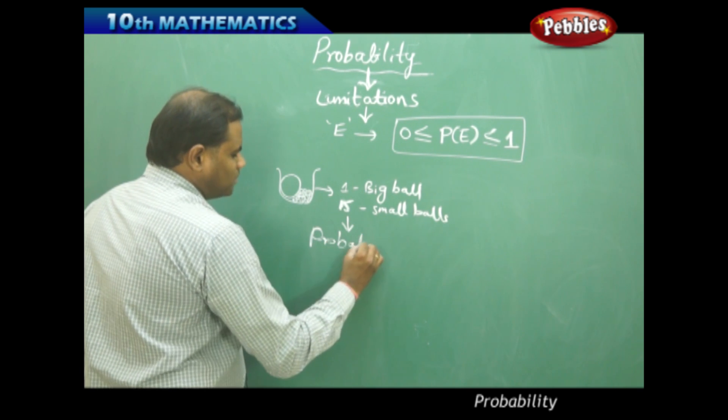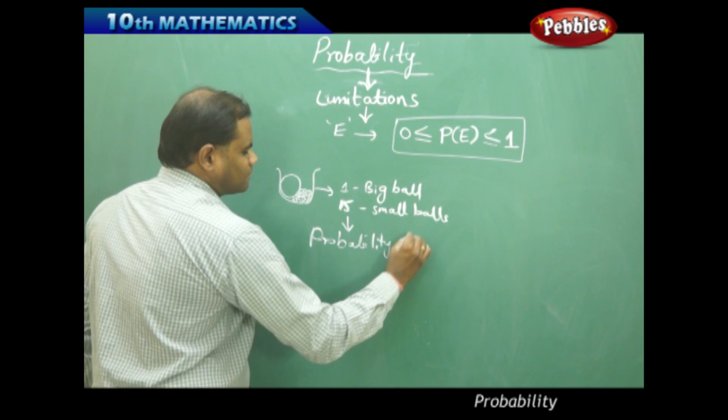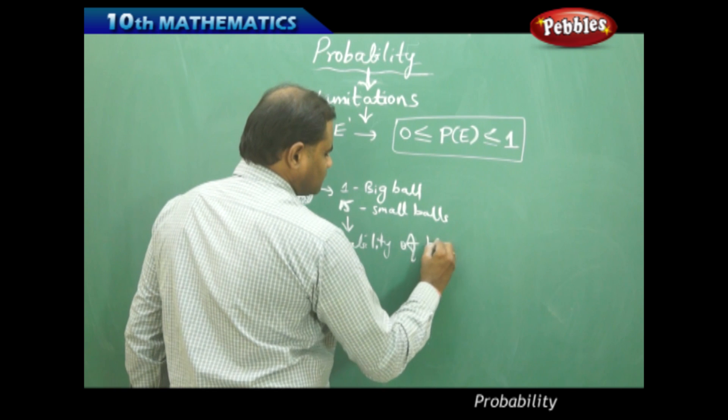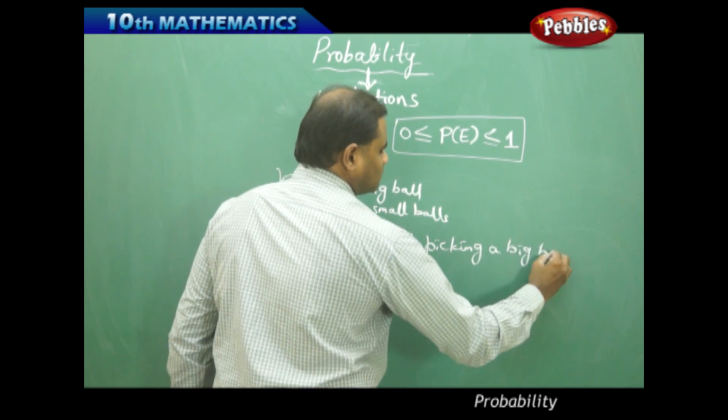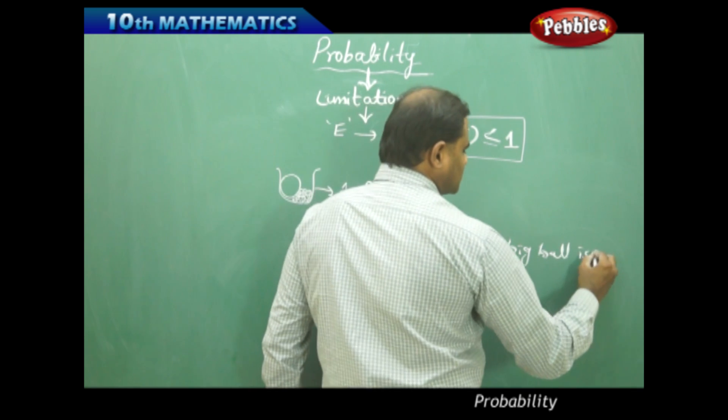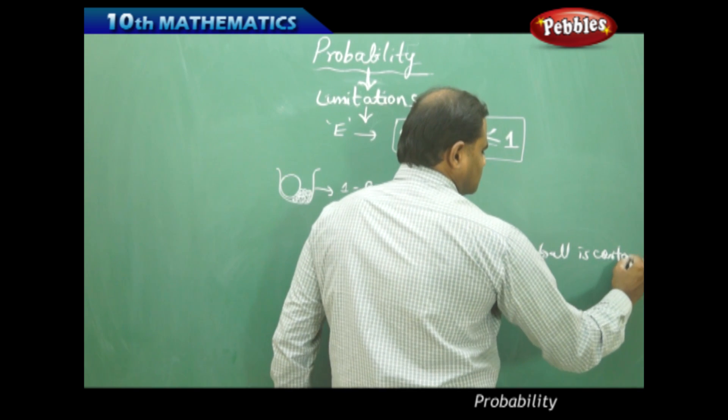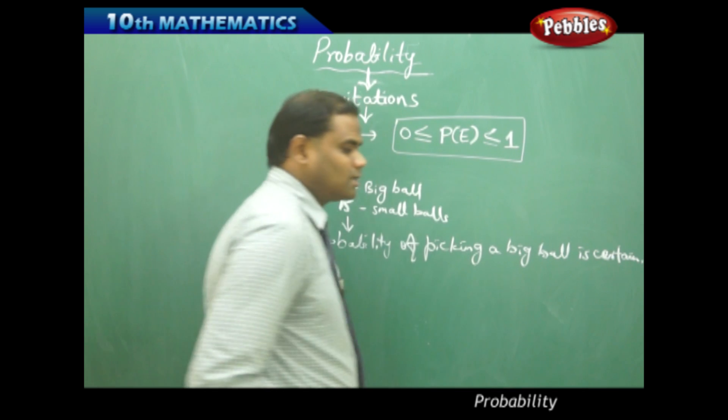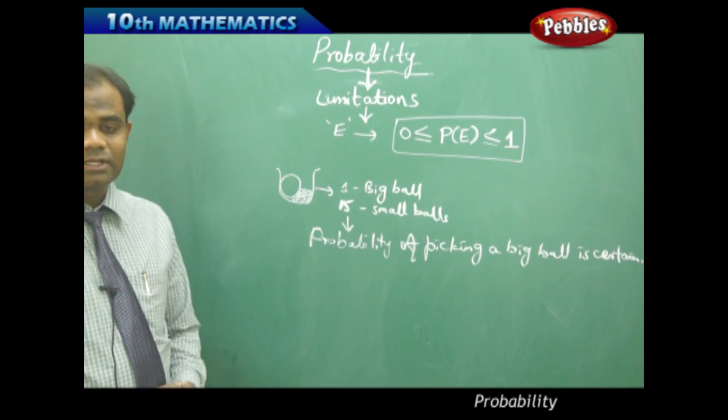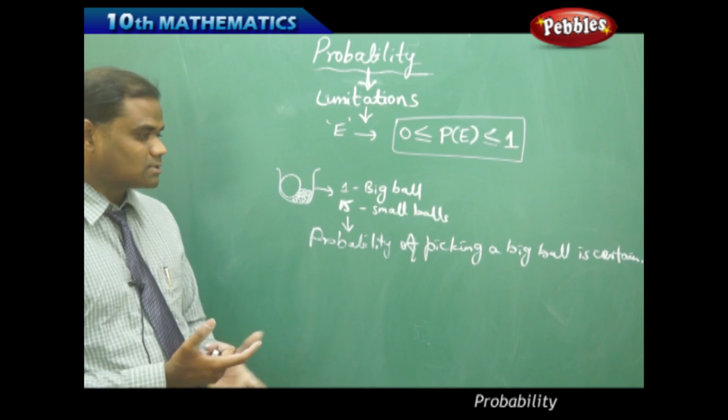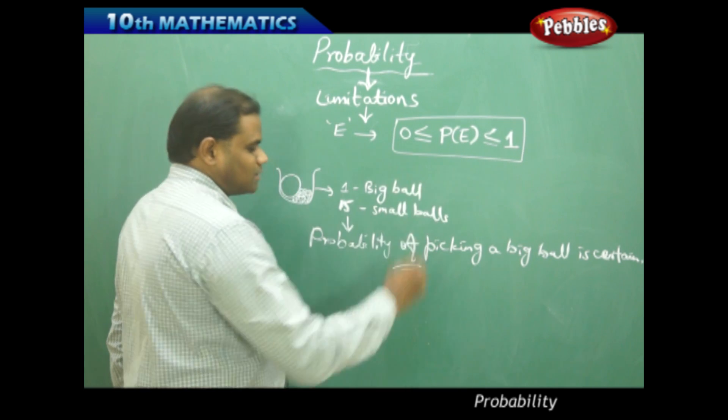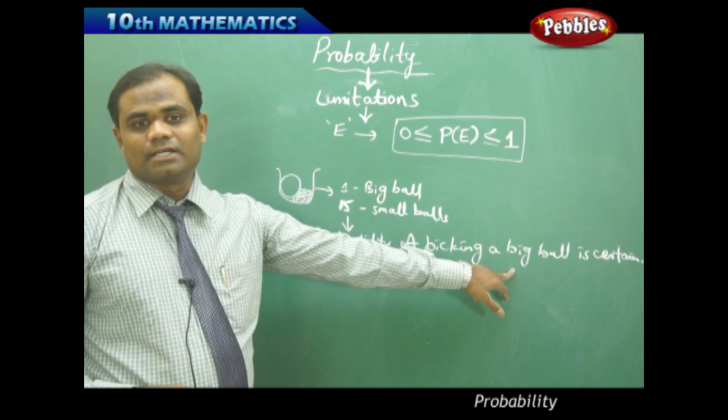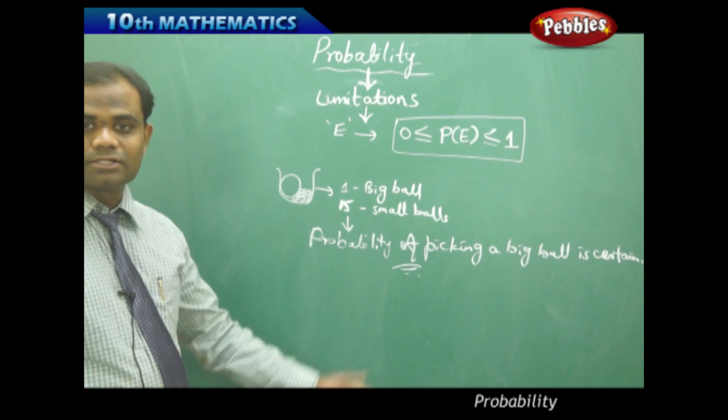The probability of picking a big ball is certain. But this is an upset to the definition of probability because N by N doesn't give the correct answer. In general, picking up a big ball is certain but this has its own limitation.